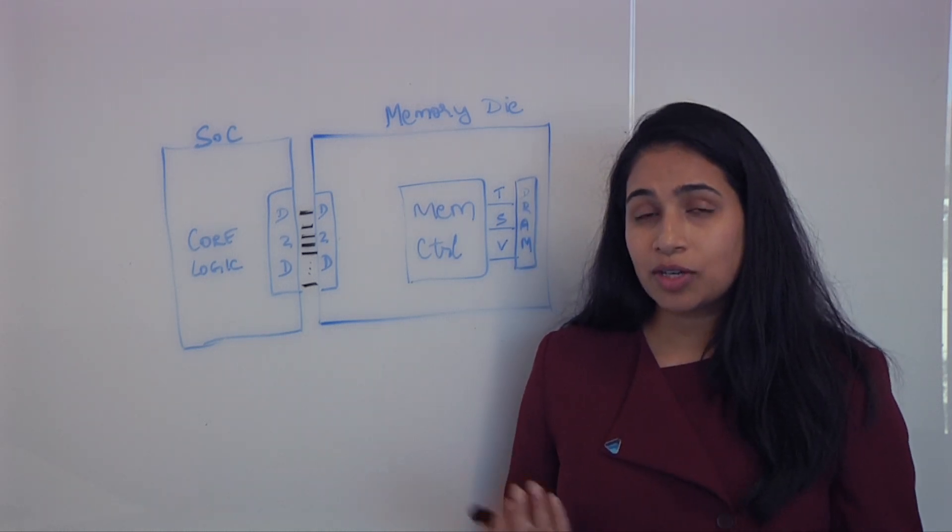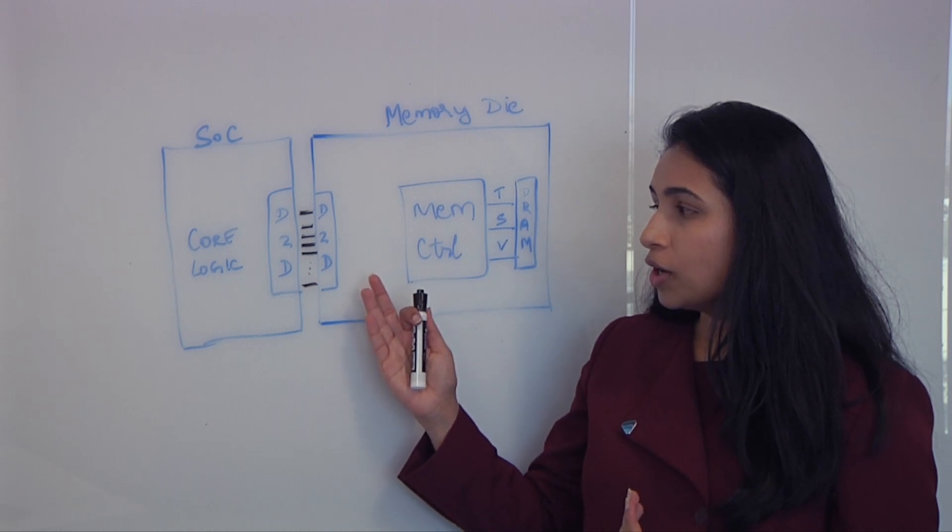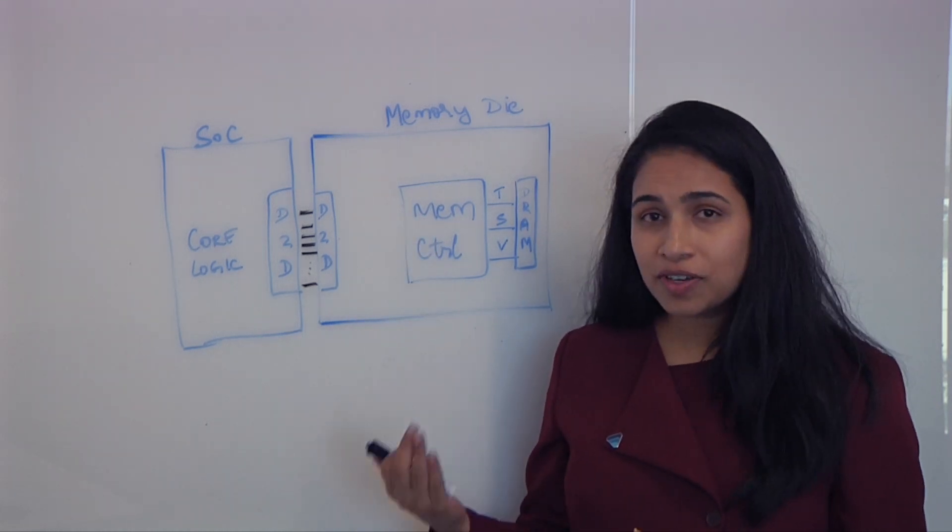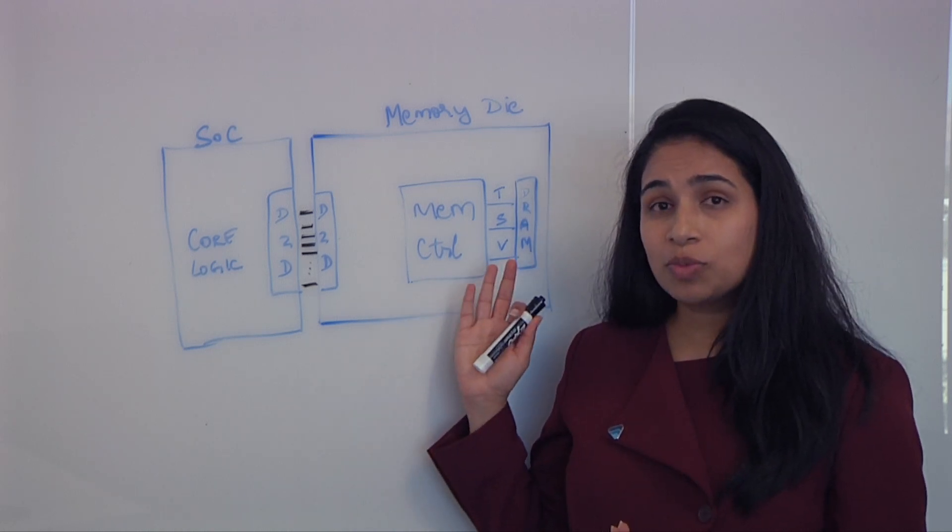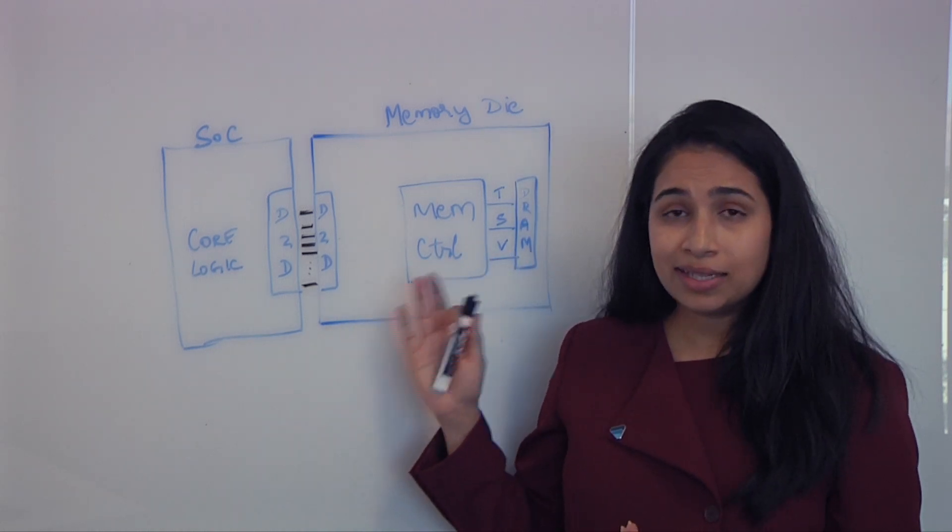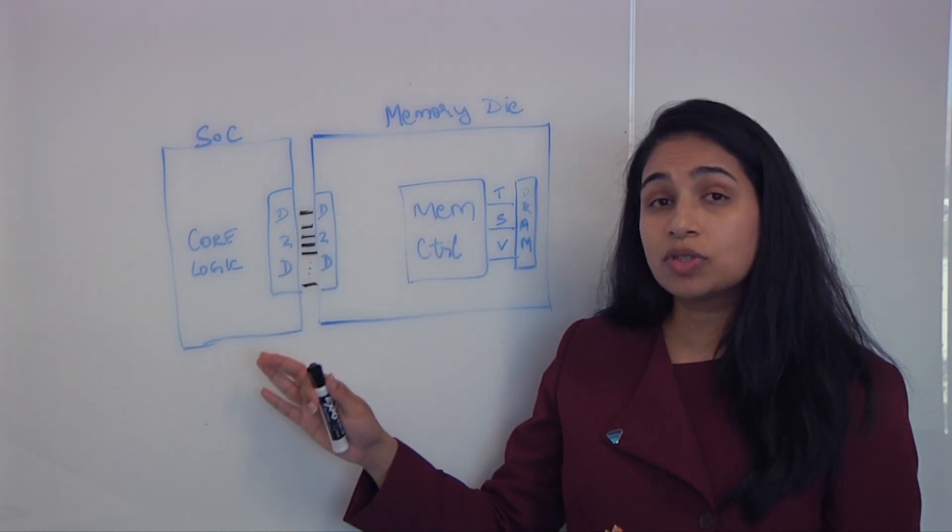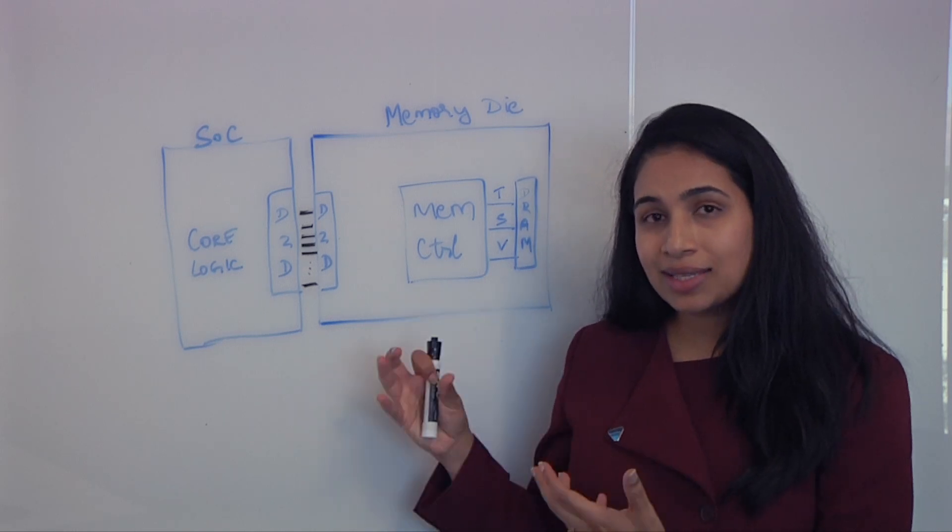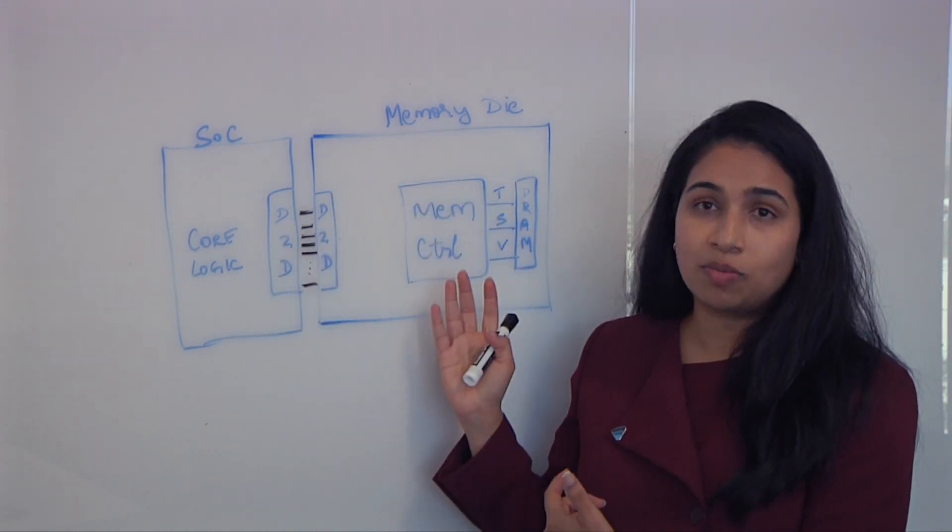So one of the advantages to actually doing a custom implementation is that you already have a die where your shoreline is already reserved for some type of a die-to-die interface. You basically can repurpose that die-to-die interface now to transmit or stream your data either through AXI or some sort of a streaming protocol over to your SOC core logic die. So basically you're repurposing some of the already existing die-to-die interface between the SOC die and your memory die.